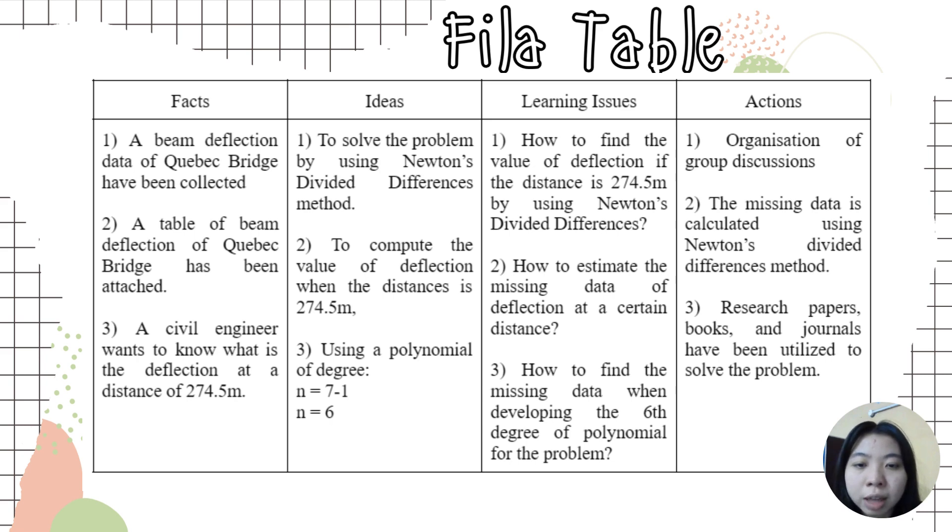We're using a polynomial of degree n equal to 7 minus 1 and n is equal to 6. For the learning issue, how to find the value of deflection if the distance is 274.5 meters by using Newton's Divided Difference. Second, how to estimate the missing data of deflection at a certain distance and how to find the missing data when developing the 6th degree polynomial for the problems.